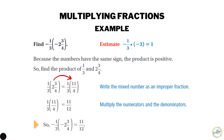So negative one-third times negative two and three-fourths equals eleven-twelfths. Is that answer reasonable? We estimated the answer would be about one, and eleven-twelfths is very close to one, so yes, this answer is reasonable.